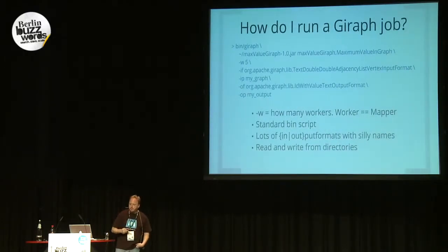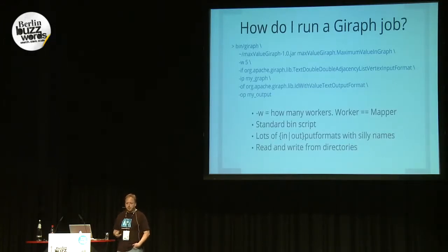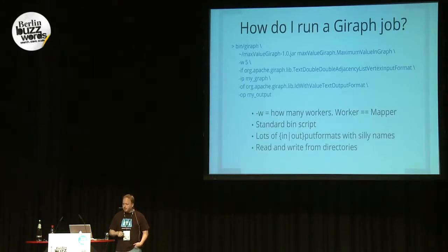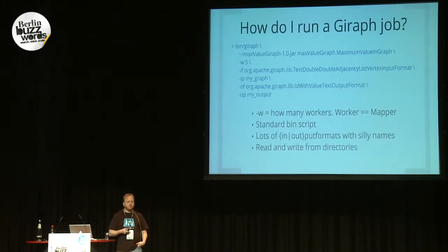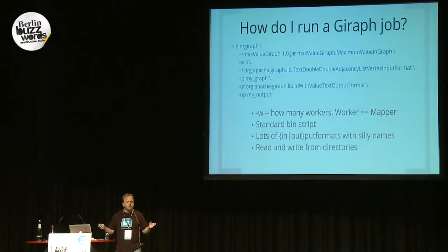If you want to run a Giraph job, we're trying to make this easier — it was pretty gnarly until recently. We have a standard shell script, so anybody used to working with Hadoop, Pig, or Hive will recognize how this works. You pass in your jar and tell it which class you want to run — the one that implements Vertex. You pass in how many workers you want, where a worker is equivalent to a mapper. Unlike in MapReduce where the number of maps is defined by the input, here you have to explicitly define it yourself, figuring out enough mappers to hold your graph.